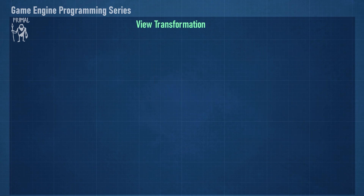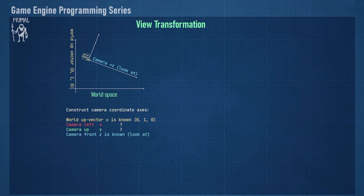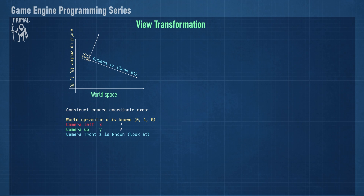Moving on to the view transformation matrix, we can use these operations to construct a coordinate system for the camera. We make use of the fact that we already know the Z-axis of the camera's frame, which is simply the direction towards which the camera is looking. Sometimes the convention is that the camera looks in the opposite direction, but in Primal Engine I choose this to be the orientation for the camera. Another axis that we can use is the world up vector, which in general is simply the unit vector pointing in the positive Y-axis. Using these two vectors, we want to construct three axes that are perpendicular to each other, just like the X, Y and Z-axis used in the world's coordinate system. We can find a vector perpendicular to the plane of the camera's Z-axis and the world's up vector by calculating the cross product of these vectors — this is the camera's X-axis.